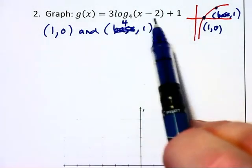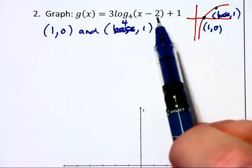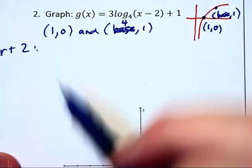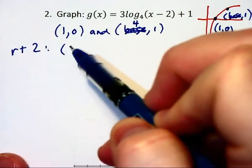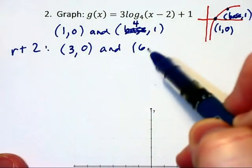First, we've got this x minus h, or x minus 2, so h is 2 and we're moving this graph two units to the right. Let's write that down: right 2. Each of these two points transform to (3,0) and (6,1).